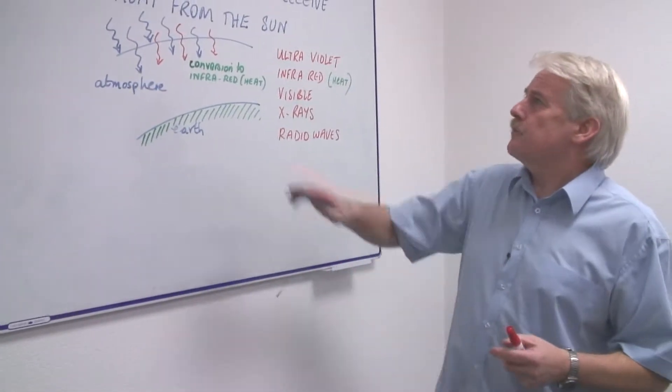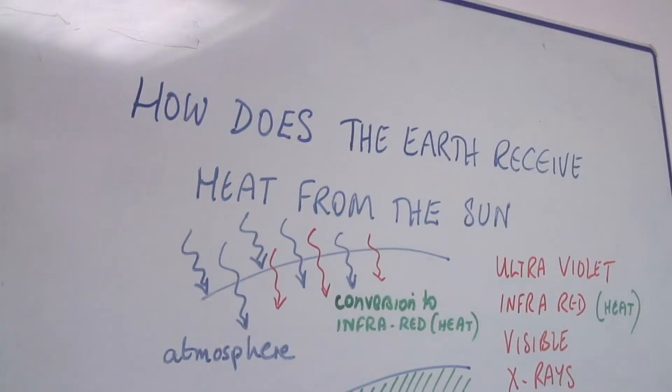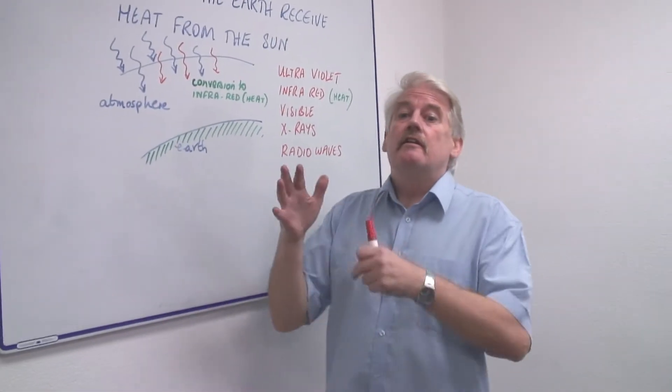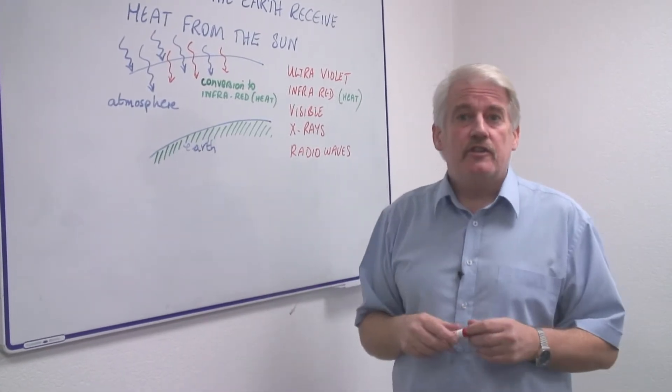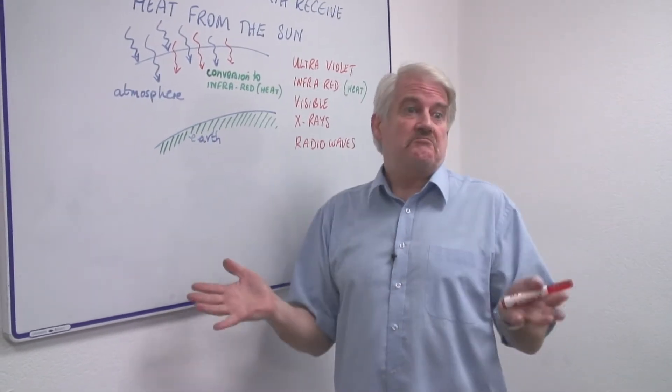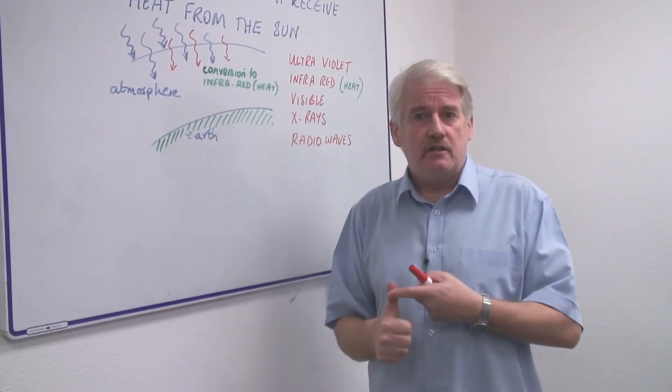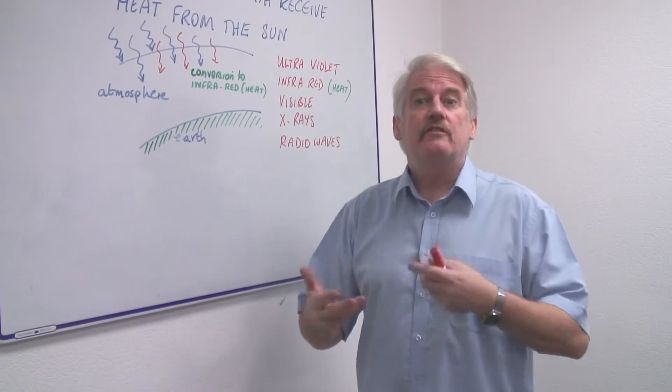Hi I'm Steve Jones and I'm going to tell you how the earth receives heat from the sun. Well it doesn't receive heat directly. The space between the earth and the sun of course is a vacuum. It doesn't contain any material so heat can't be conducted and you can't get any convection.